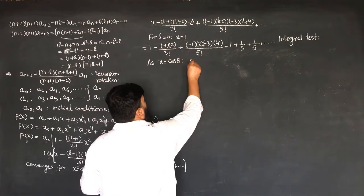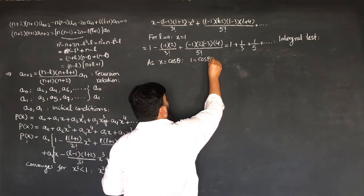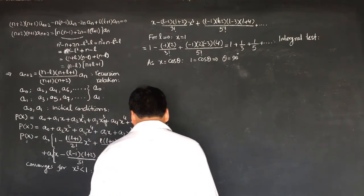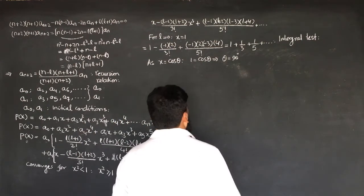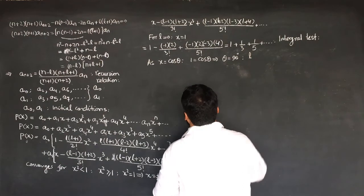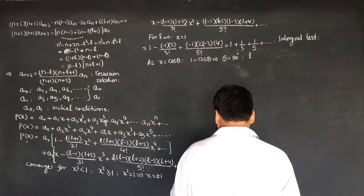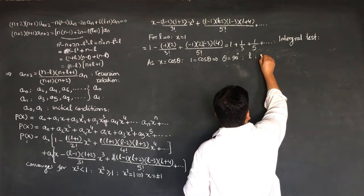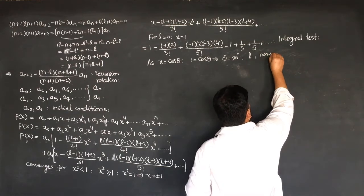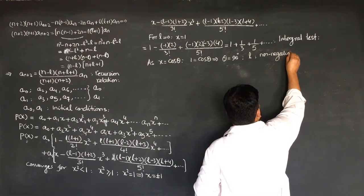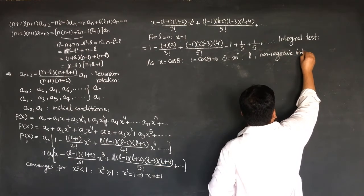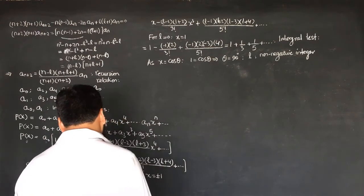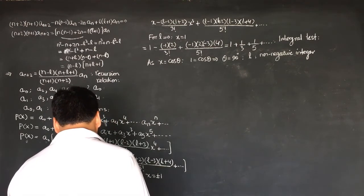Since x equals cos θ, when x equals 1 that means cos θ equals 1, which implies θ equals 0 degrees. This tells us that L should be a non-negative integer, and only non-negative values of L are valid.